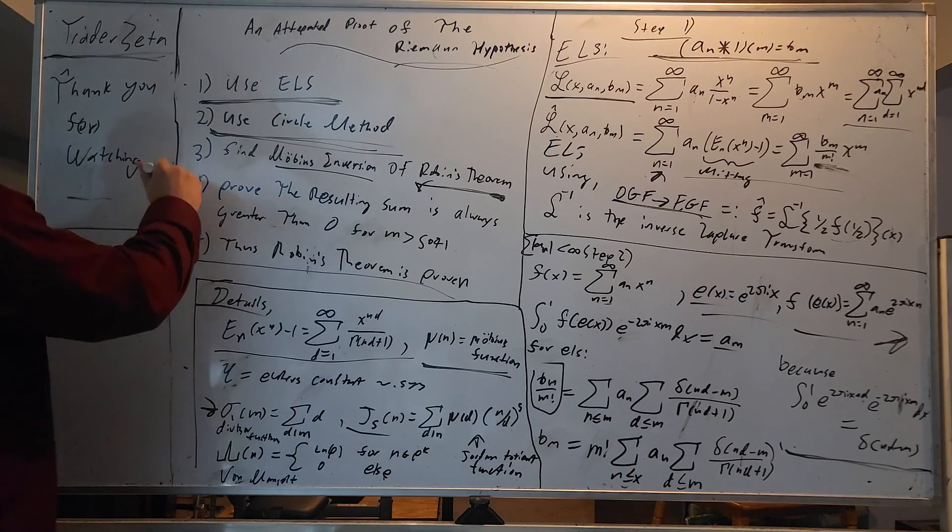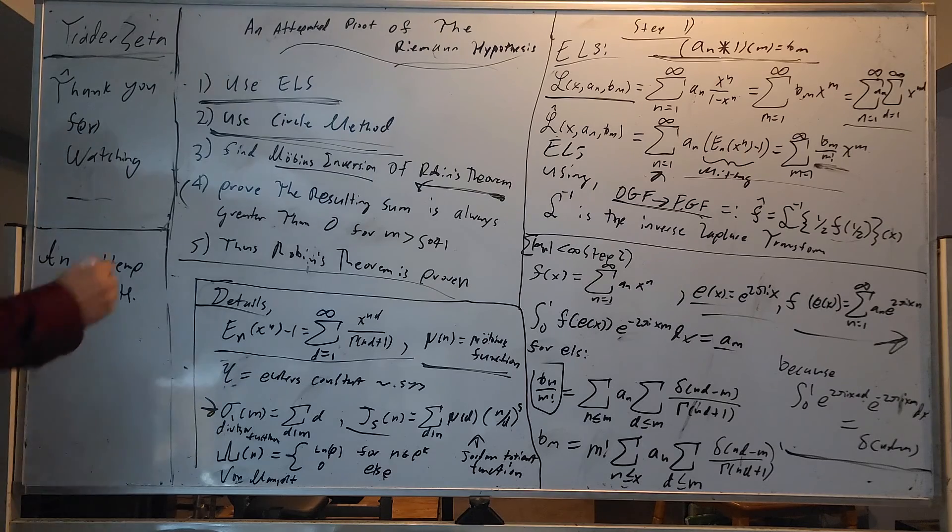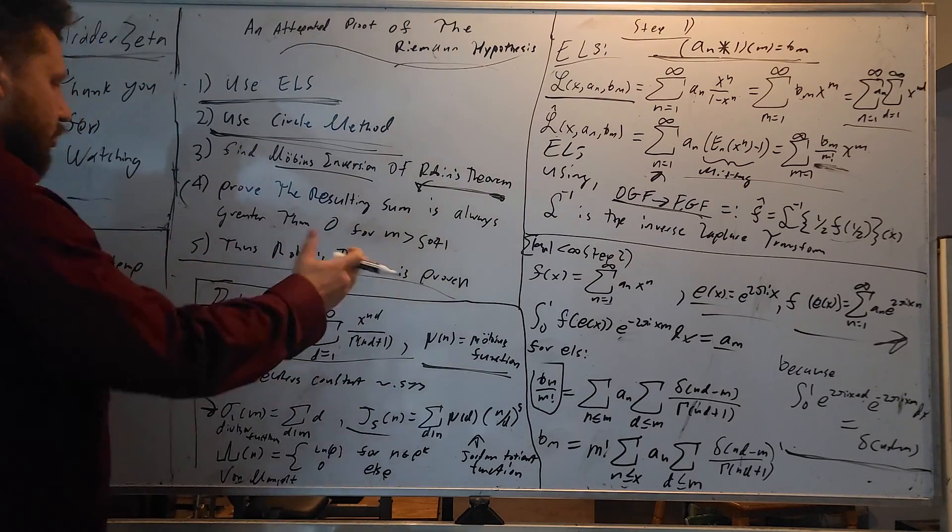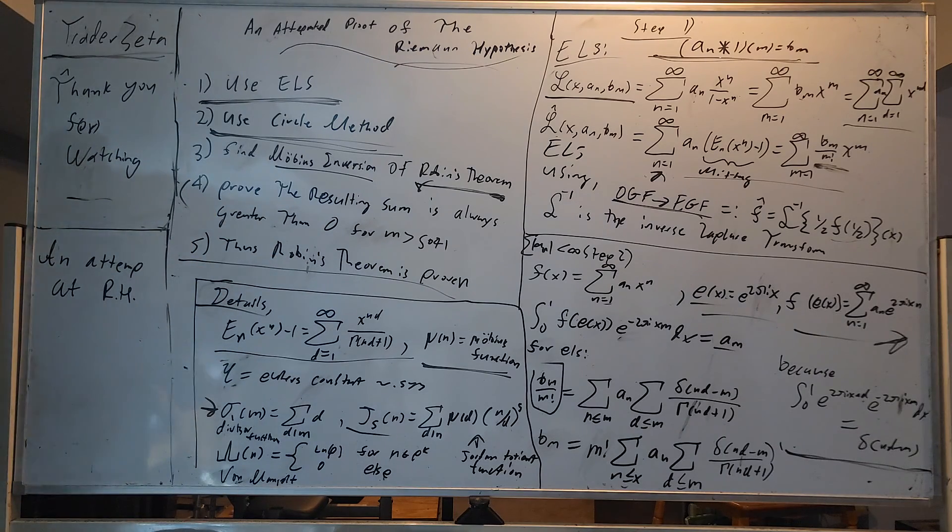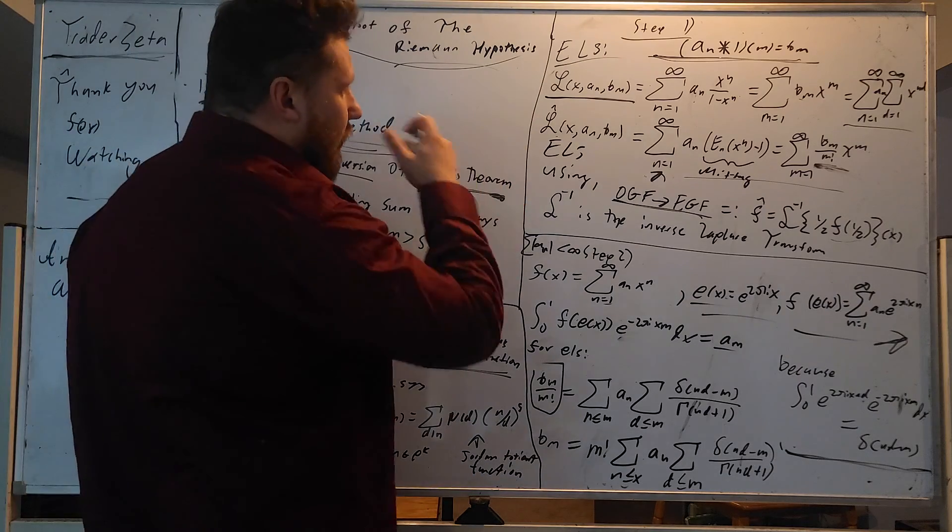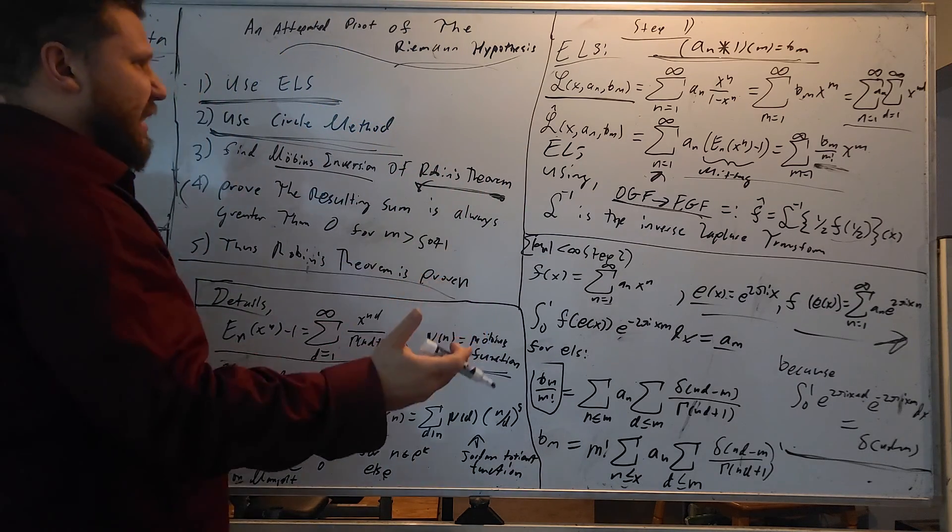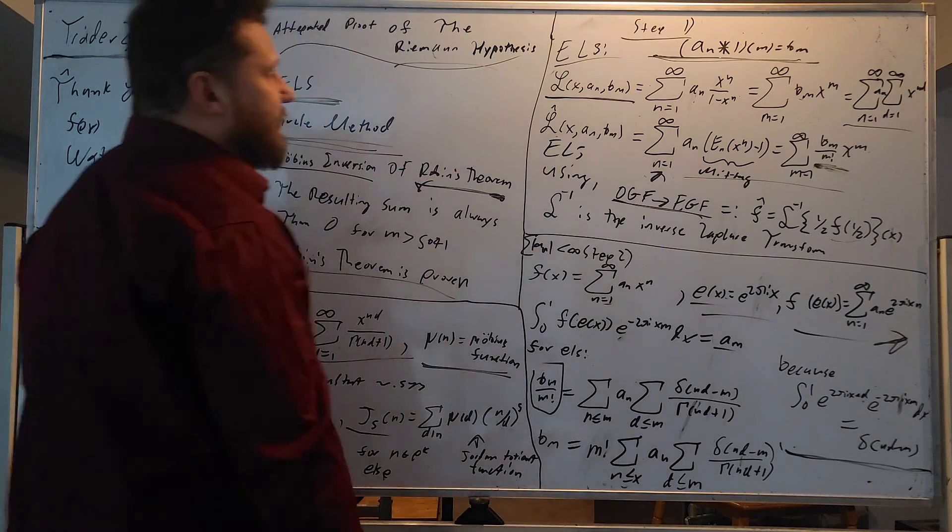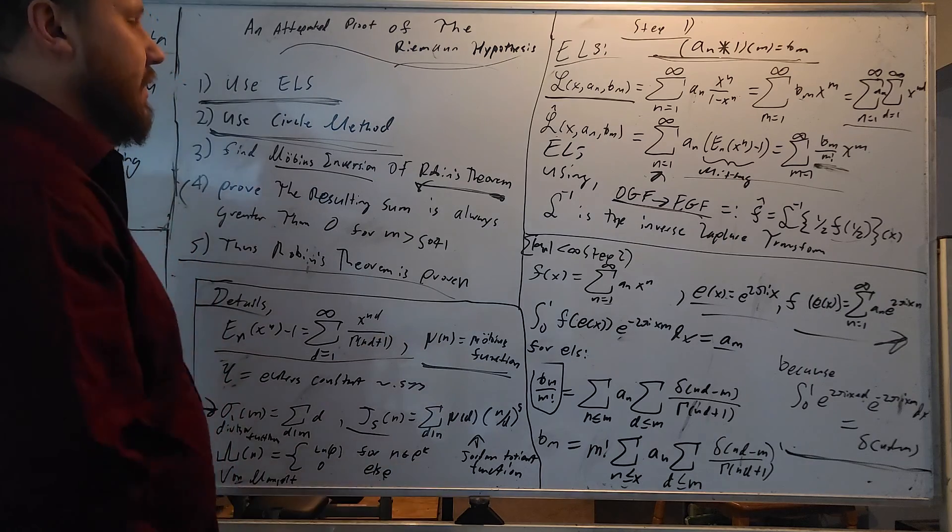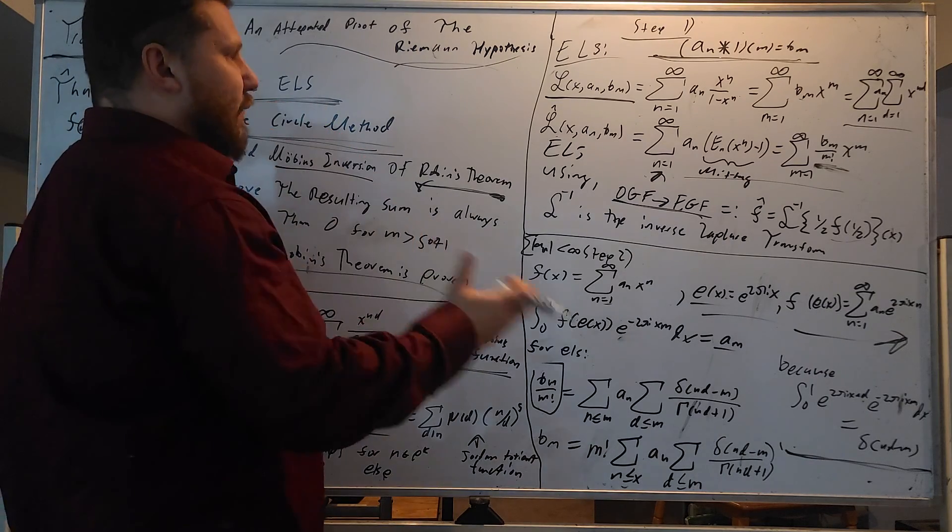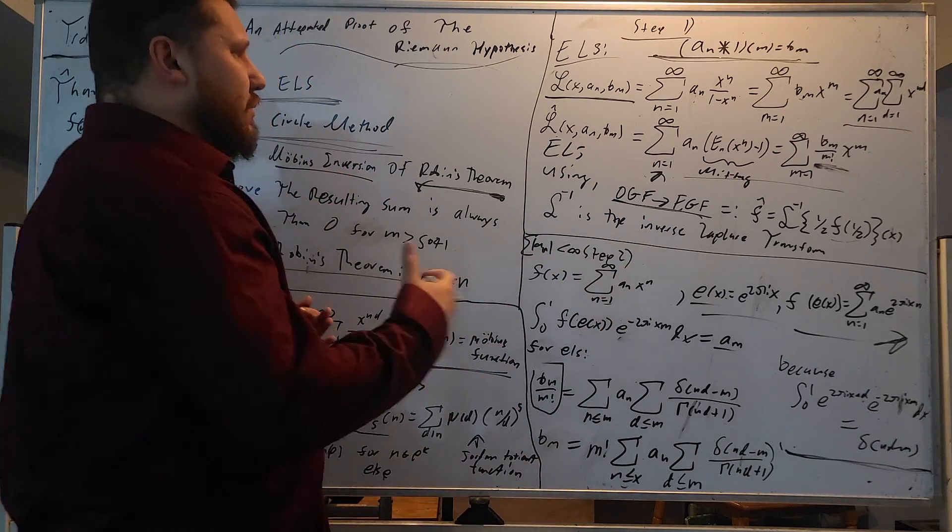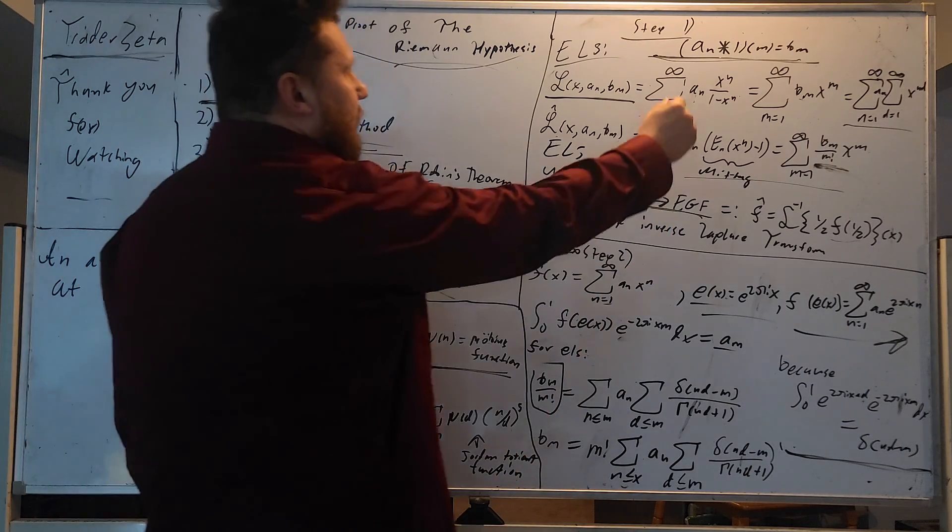And that's going to be really encompassing. So this is a little bit esoteric right now, but it's going to be really interesting. So five, thus the Riemann Hypothesis is proven true in relation to Robin's theorem. All right, let's go to step one. So step one, we are going to derive the exponential Lambert series.